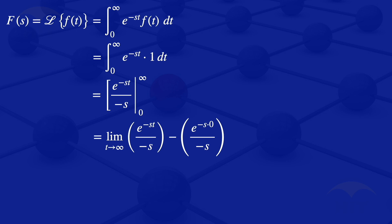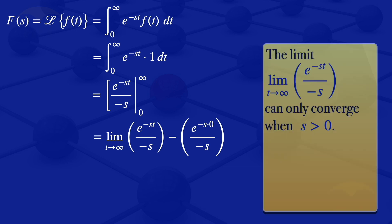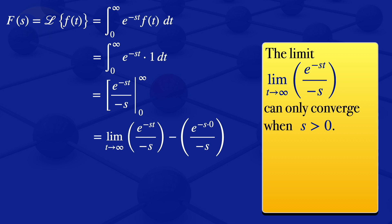Let us now look at that limit. The limit as t approaches infinity of e^(-st) divided by -s. When we started, we said that t is greater than or equals to 0. So that limit can only converge when s is greater than 0, and when s is greater than 0, that limit will converge to 0.